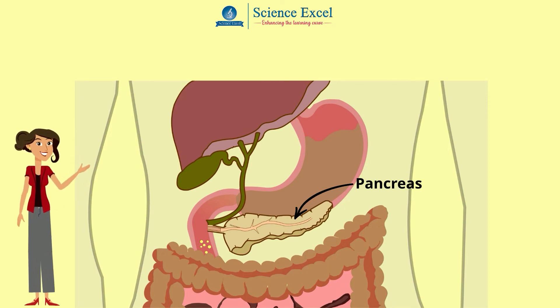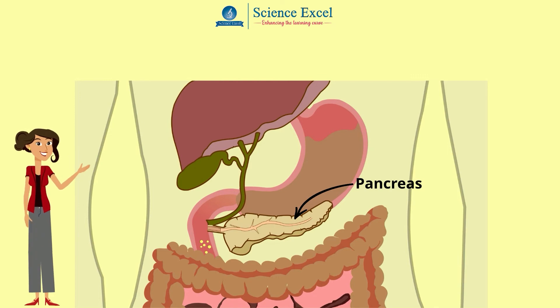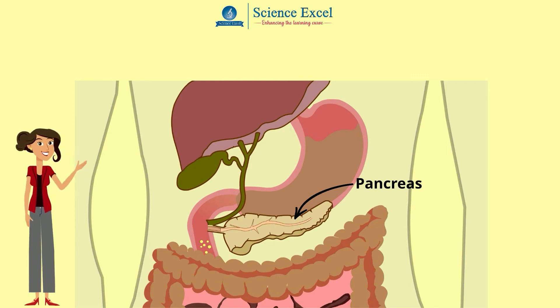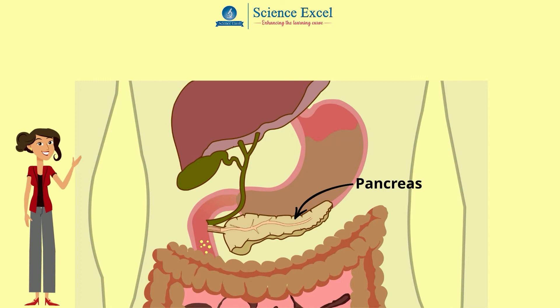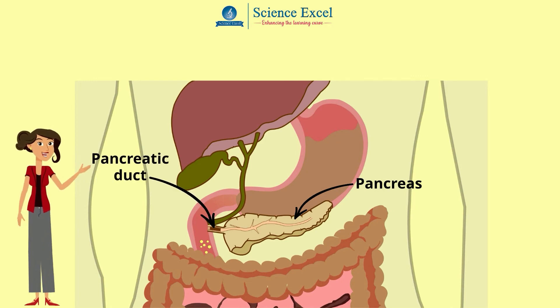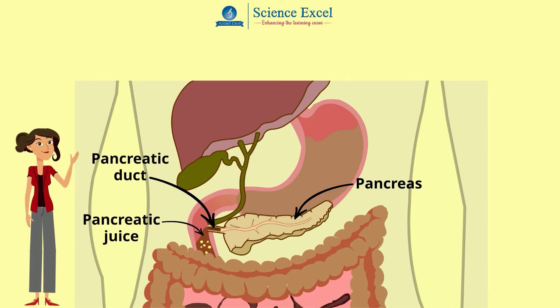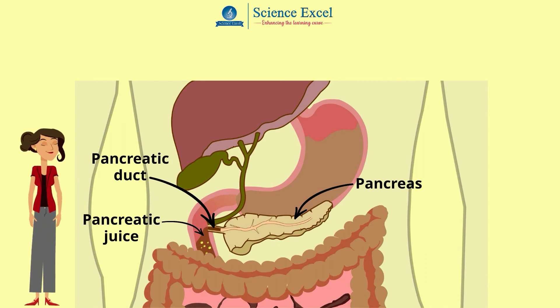The pancreas is a cream-colored gland lying just underneath the stomach. It secretes pancreatic juice which travels through the pancreatic duct into the duodenum.